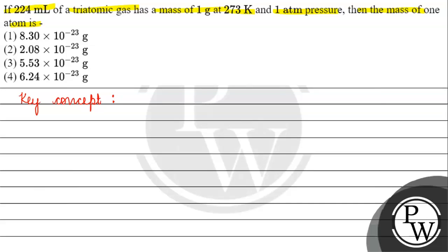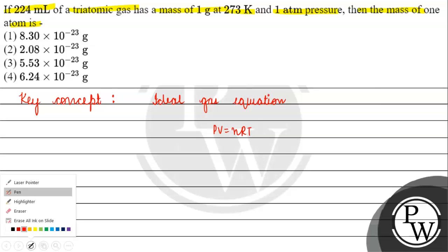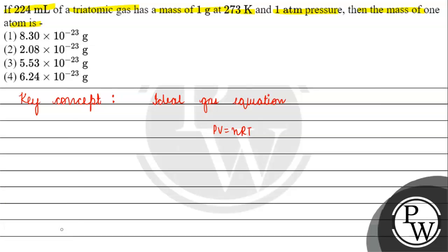The ideal gas equation is PV = nRT, where P is pressure, V is volume, n is number of moles, R is the universal gas constant, and T is temperature.